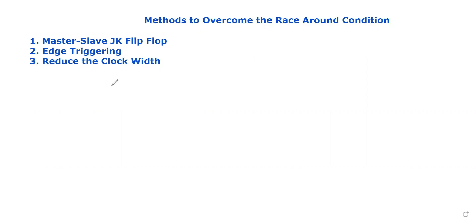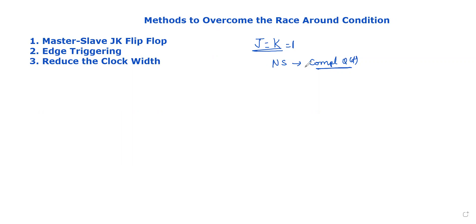Hello students, in this video I will explain how to overcome the race-around condition using different methods. The race-around condition occurs when J is equal to K equal to 1 — the next state is the complement of the previous state. This unstable behavior changes for every clock pulse.